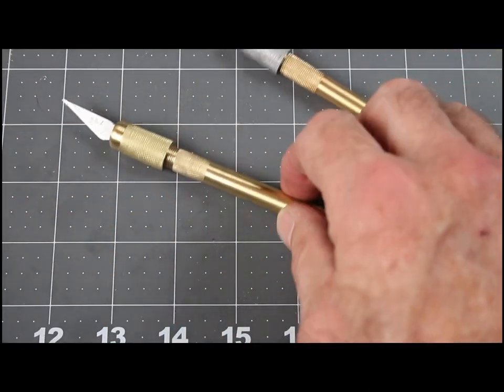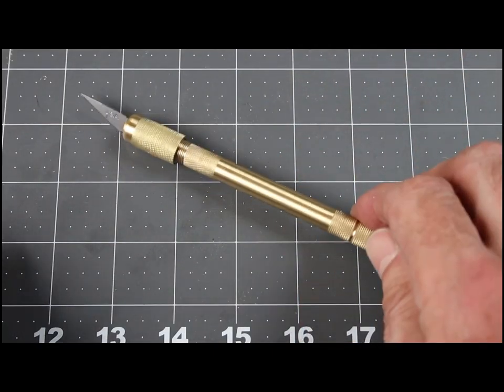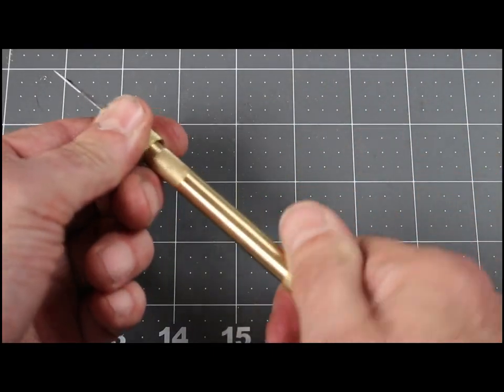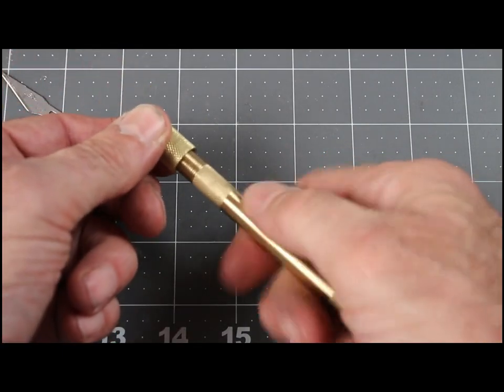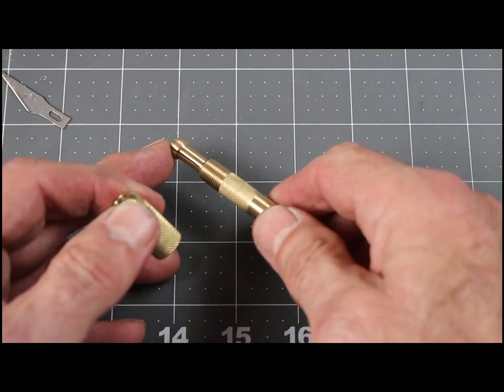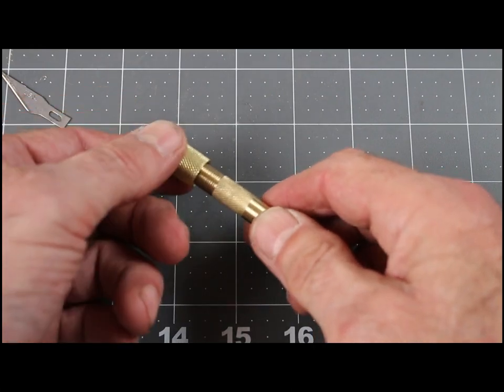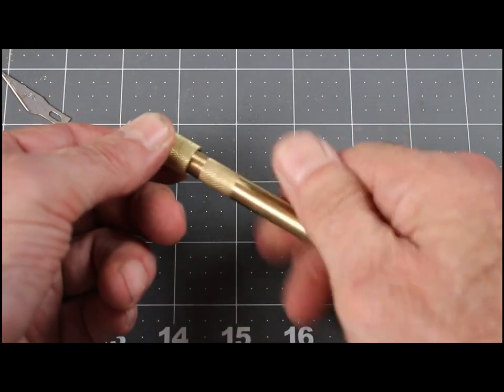So I decided to make an X-Acto knife holder as well. It uses the same idea, so I'll take the blade out so you can see it. Take the nut off there, and you can see it has a slit right there for the knife blade and just screws right on.